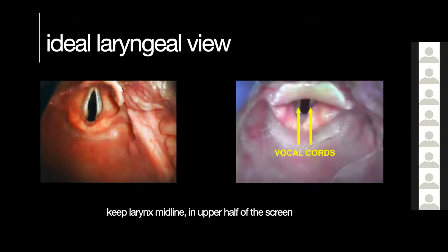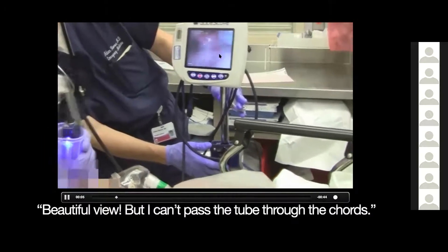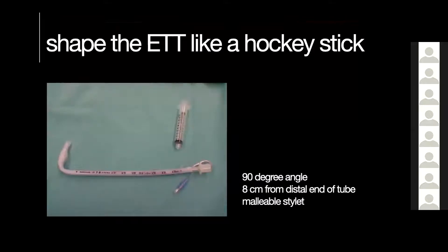Tip number three: when your tube keeps hitting the arytenoids and pulling back the scope still isn't working, make sure your ET tube is shaped like a hockey stick. If you don't have the rigid stylet that comes with the GlideScope — which is the best option — you can shape a malleable stylet like a hockey stick: a 90-degree angle about eight centimeters from the distal end of the tube. That's your mark. Do it yourself if your RT isn't used to doing this.